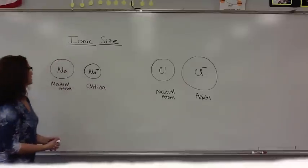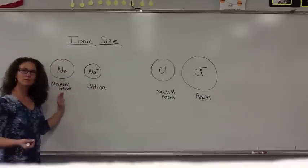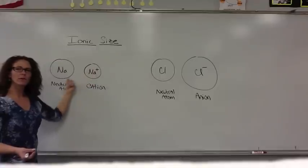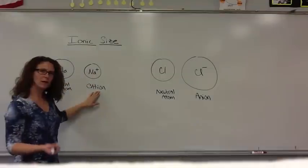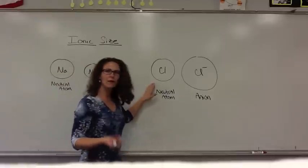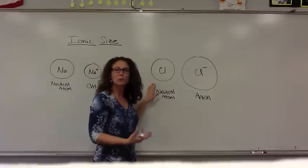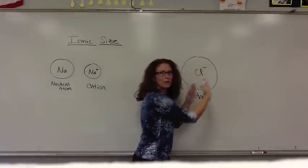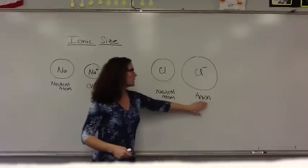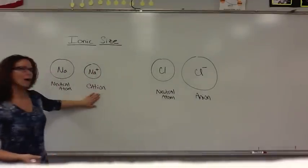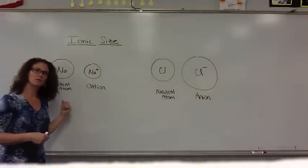As a quick review, a neutral atom, if it loses an electron, becomes smaller than the neutral atom. Cations are smaller than the neutral atom. However, if a neutral atom gains an extra electron, there's more electron-electron repulsions going on inside that atom, so the boundary tends to get a little bit larger. Anions are larger than their neutral atom, and cations are smaller than their neutral atom.